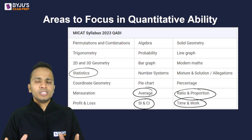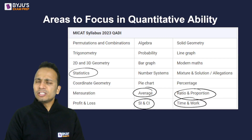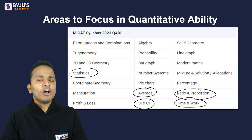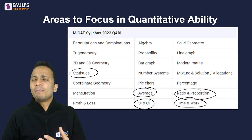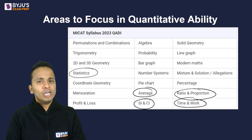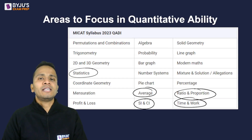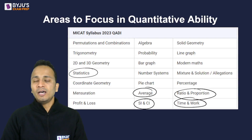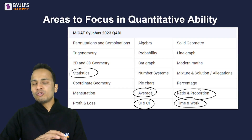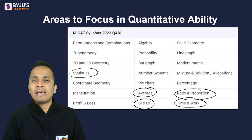Number systems is also a very important part of the QA section. Other than quant, this section has also seen questions from data interpretation — single chart or maximum two chart questions may appear involving basic calculations based on percentages, approximation techniques, and basic multiplication. If you have basic practice with data interpretation questions you'll be able to attempt them easily. However, since this examination tests speed as well, a good amount of practice is a must before you take this paper.